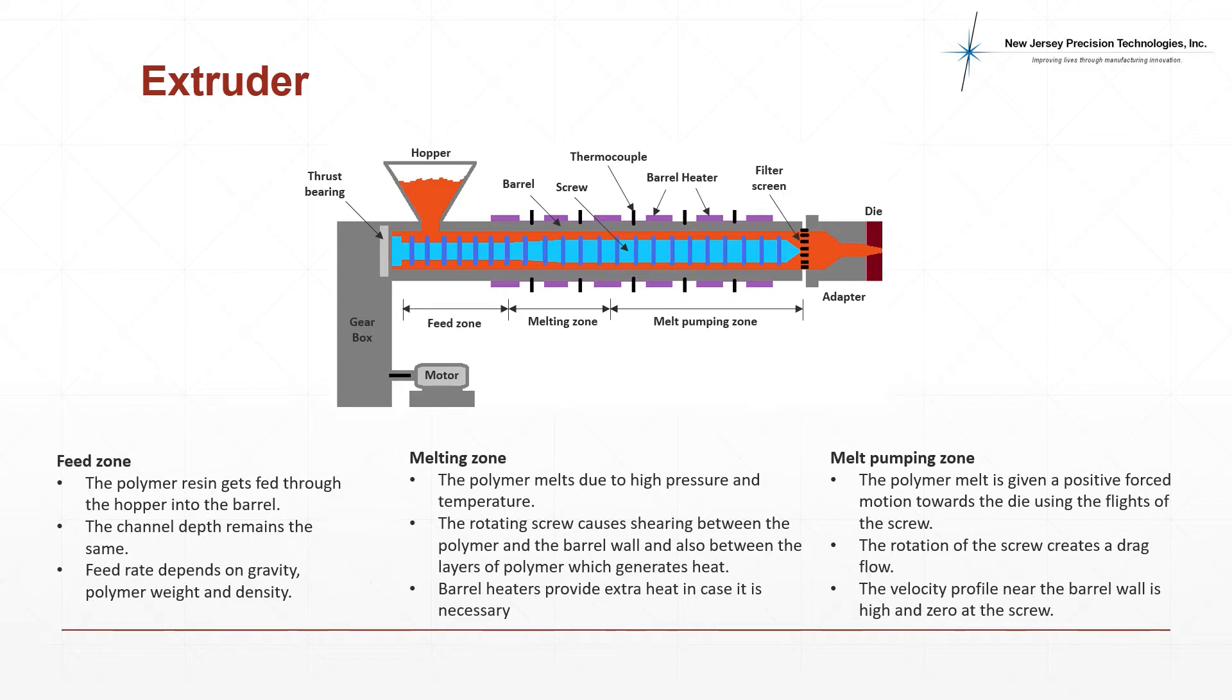In the melt pumping zone, the rotation of the screw creates a drag flow due to its flights, which creates a positive flow of the polymer through the die. The polymer goes through a filter screen and breaker plate which remove contaminants from the melt and distribute the polymer evenly through the die.